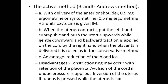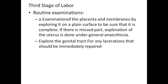Active management — also known as the Brandt-Andrews method: with delivery of the anterior shoulder, 0.5 mg of ergometrine or Syntometrine (ergometrine plus oxytocin) is given IM. When the uterus contracts, the left hand is placed suprapubically and pushes the uterus upward, while gentle downward and backward traction is applied on the cord by the right hand. Advantage: reduction of blood loss. Disadvantage: a constriction ring may occur with retention of the placenta, or avulsion of the cord if undue pressure is applied; inversion of the uterus may occur if the fundus is pressed while the uterus is lax.